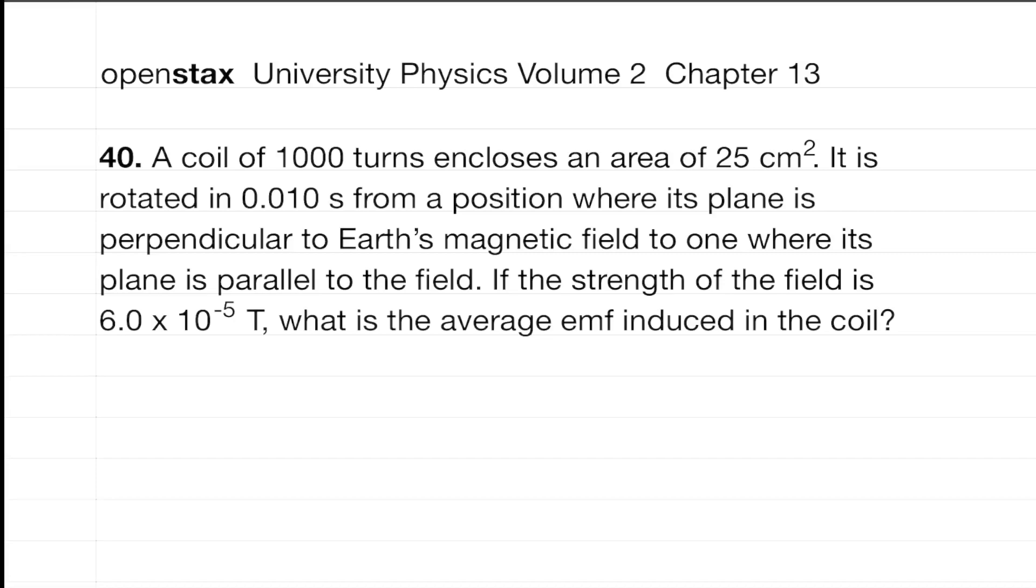So we have a coil. It has 1,000 turns. It encloses an area of 25 centimeters squared, and we'll have to be careful converting that. It's rotated in 0.010 seconds from a position where its plane is perpendicular to Earth's magnetic field to one where its plane is parallel to the field.